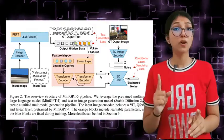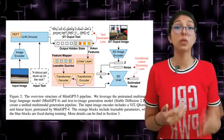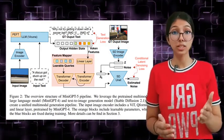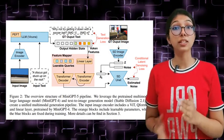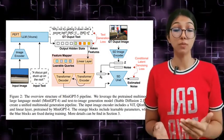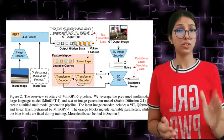The research follows a two-stage method. First, it aligns high-quality text-aligned visual features. In the second stage, it coordinates visual and text prompts to ensure seamless generation. The team adopts a dual-law strategy to balance text and images, optimizing training efficiency.